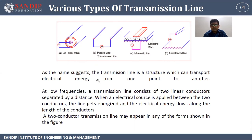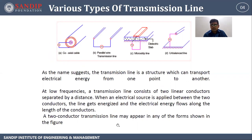As the name suggests, the transmission line is a structure which can transport electrical energy from one point to another. At low frequencies, a transmission line consists of two linear conductors separated by a distance. When an electrical source is applied between the two conductors, the line gets energized and electrical energy flows along the length of the conductors. A two-conductor transmission line may appear in any of the forms shown in the figure.